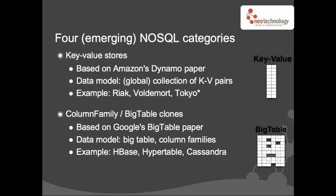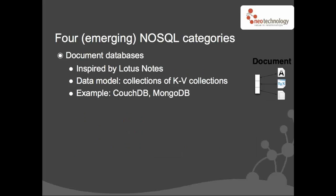The third category is document databases. The first document database that got really popular was CouchDB, which is inspired by Lotus Notes. While Lotus Notes may not be the most amazing email client, it actually has a pretty interesting back end that uses a collection of key-value pairs as the main abstraction. Those collections are called documents and are typically expressed as JSON. CouchDB took that philosophy from the Lotus Notes back end into the web era, adding a RESTful API, JSON, and JavaScript views.